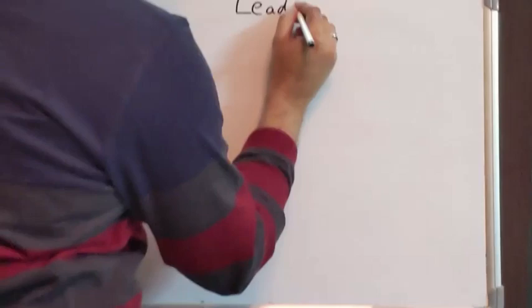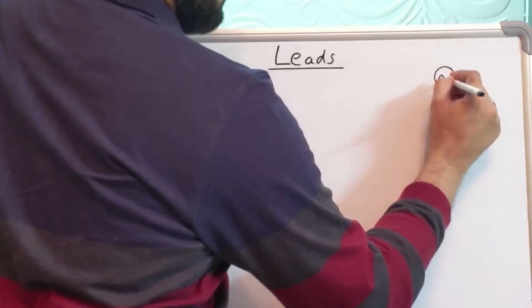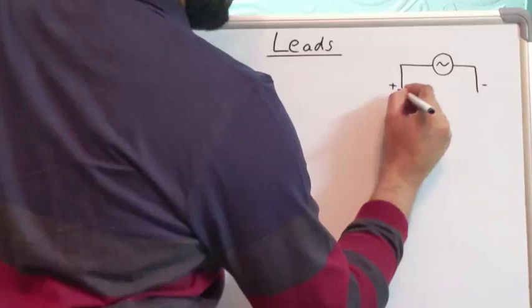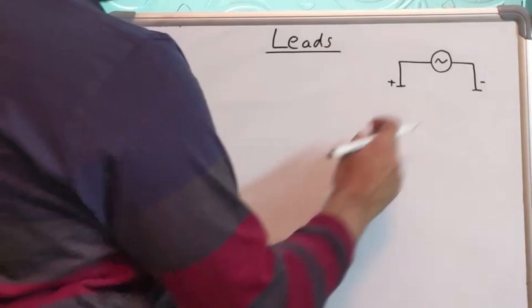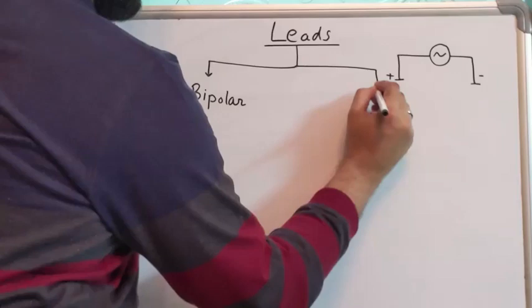To make matters simple, remember I told you that your ECG machine is like a glorified galvanometer. If that's the galvanometer, you have a positive pole and you have a negative pole. Now these positive and negative poles are connected to the galvanometer by means of something known as a lead. So when you come to your ECG, you have two types of leads: bipolar leads and unipolar leads.